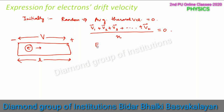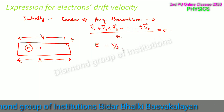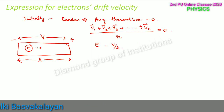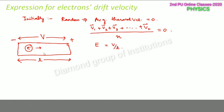Now we already know that there is a relationship between electric field E and the potential difference V. E can be written as V divided by l, because we know that electric field is the gradient of potential. So E will be equal to V by l.